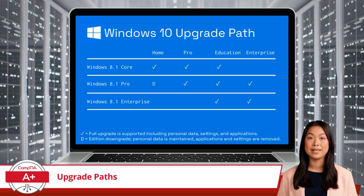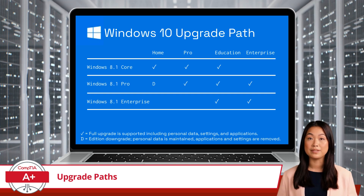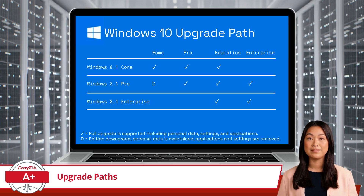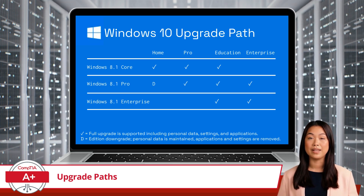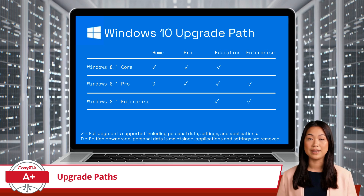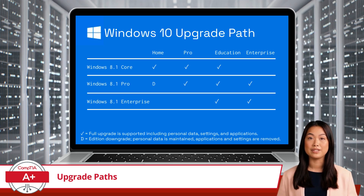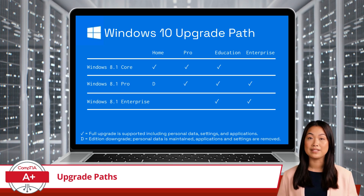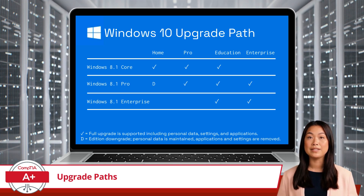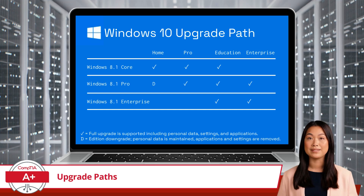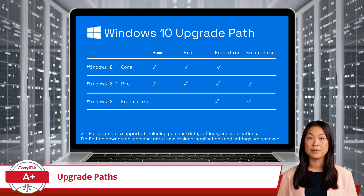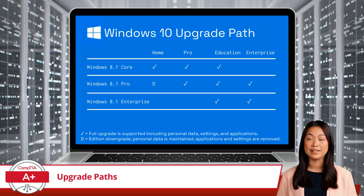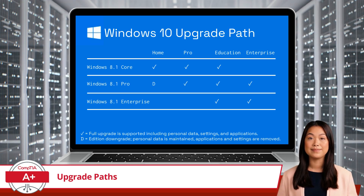Similarly, Windows 8.1 users can use the lookup tables to check for compatibility with Windows 10. These tables outline the specific scenarios that support an in-place upgrade, allowing users to retain their current setup. If an in-place upgrade is not feasible due to incompatibilities or other issues, the tables will guide users toward performing a clean install, ensuring a successful and stable transition to Windows 10.